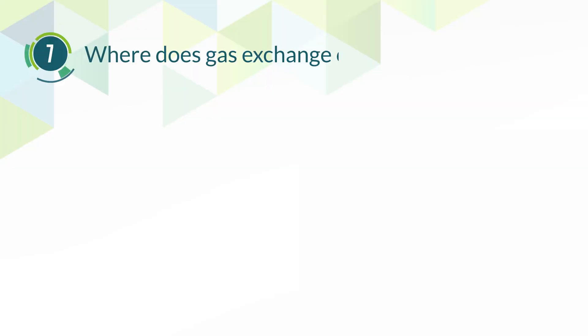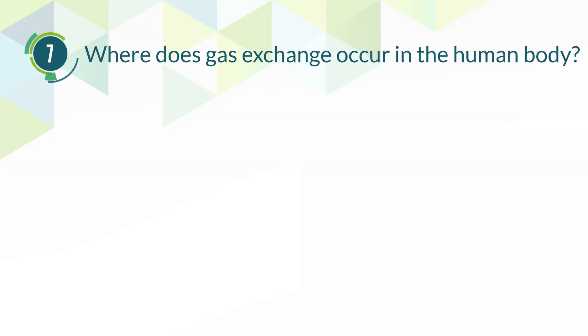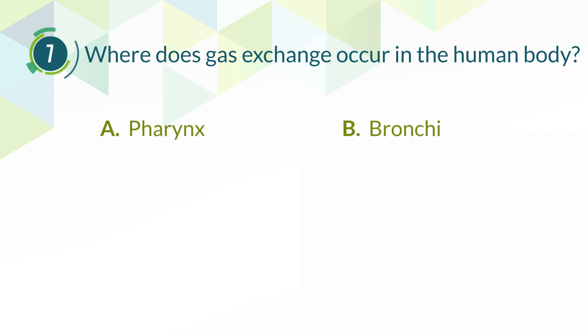Number 7. Where does gas exchange occur in the human body? A. Pharynx. B. Bronchi. C. Larynx. D. Alveoli.